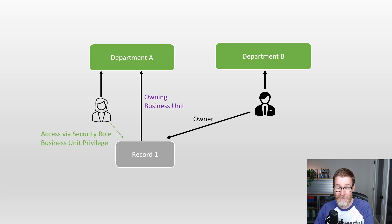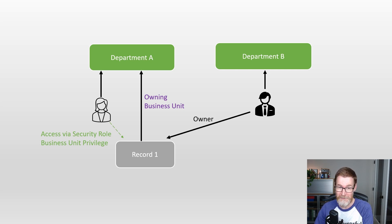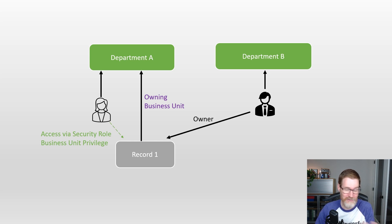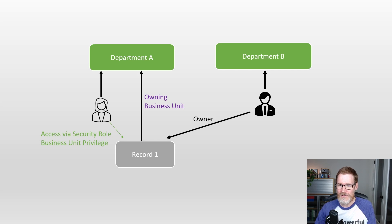With this new functionality, we can move the user to Department B and they can still maintain ownership of their records and still have access to them. However, it breaks the link between the owner and the owning business unit — because before, the owning business unit of a record was always the same as the user or team that owned the record; they were always the same. Now we have two distinct fields: the owner of a record and the owning business unit of a record. So it does open up quite a new set of opportunities in the way you would previously have engineered this kind of functionality.